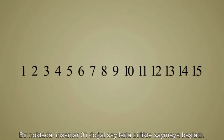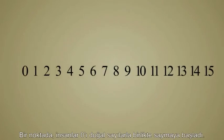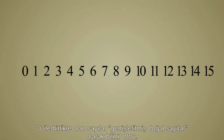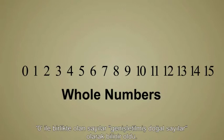At some point, people started including zero along with the natural numbers. The natural numbers plus zero became known as the whole numbers.